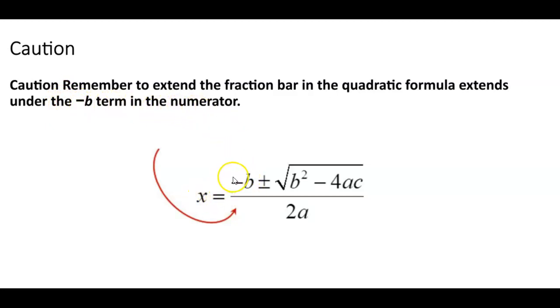So x equals negative b plus or minus the square root of b² - 4ac in the numerator, divided by 2a.